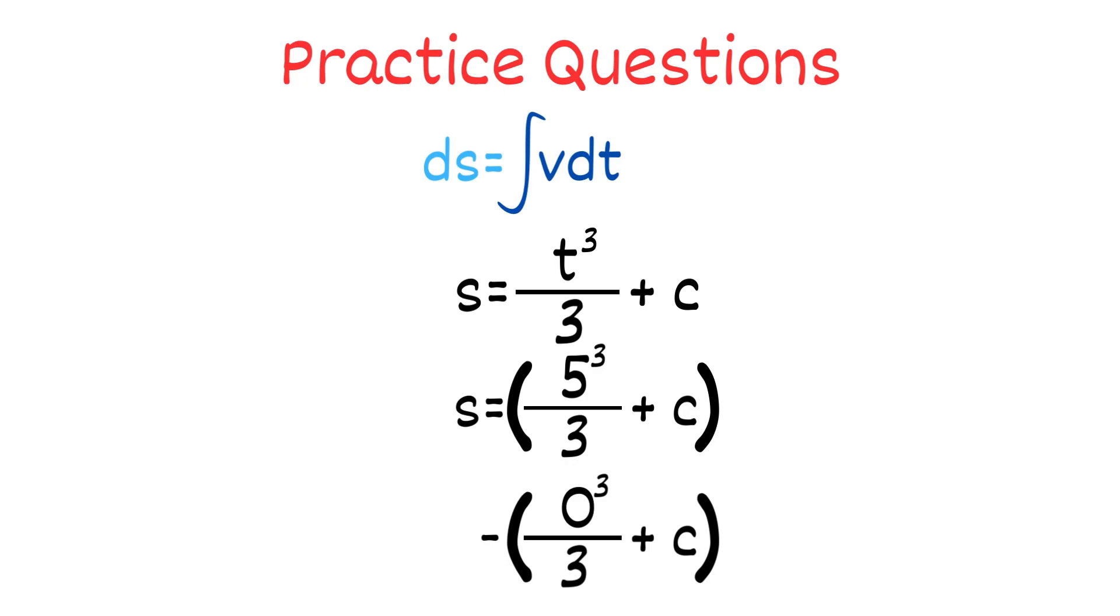Solving this gives us s = 41.67 meters. Therefore, the car travels a distance of 41.67 meters after 5 seconds.